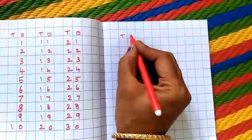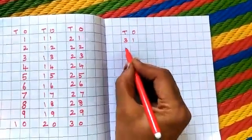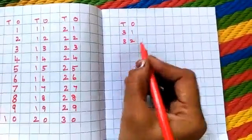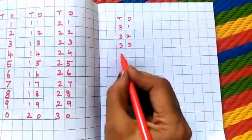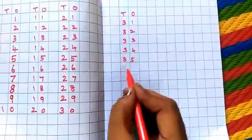10's place, 1's place. 3, 1, 31. 3, 2, 32. 3, 3, 33. 3, 4, 34. 3, 5, 35.